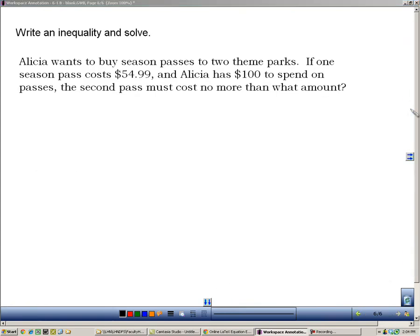Here's some practice for us to write an inequality based on a situation. Alicia wants to buy season passes to two theme parks. If one season pass costs $54.99, and Alicia has $100 to spend on passes, the second pass must cost no more than what amount? Now we'll get back to this no more than. The first thing we have to do is figure out what variable we're talking about. What's our unknown? Our unknown is the cost of the second pass. And we've got to label that with some variable. You can use c for cost, p for pass—I'll just use x to stay fairly generic.